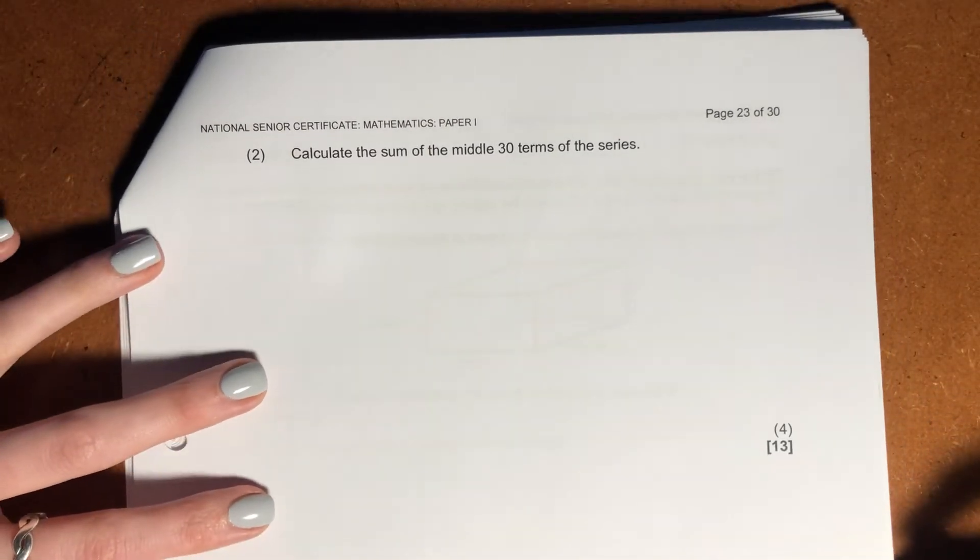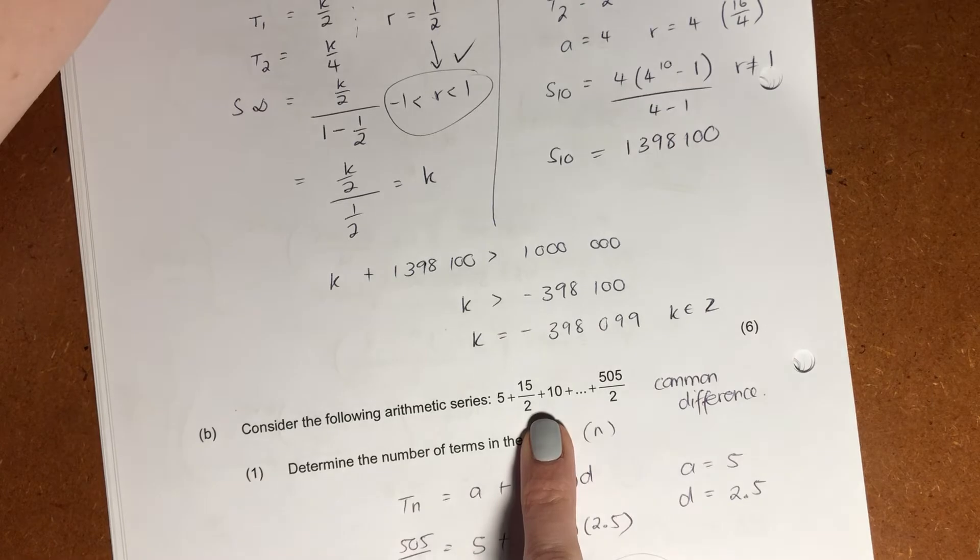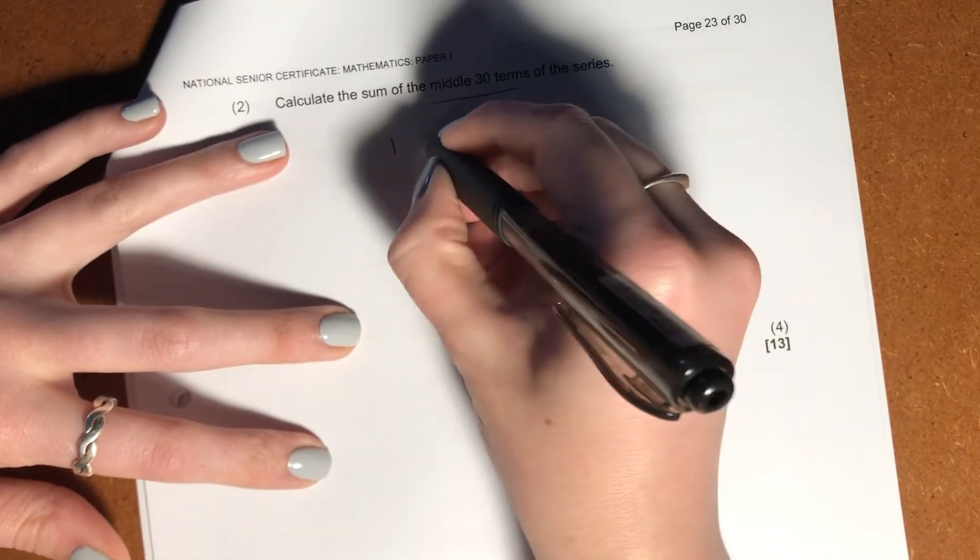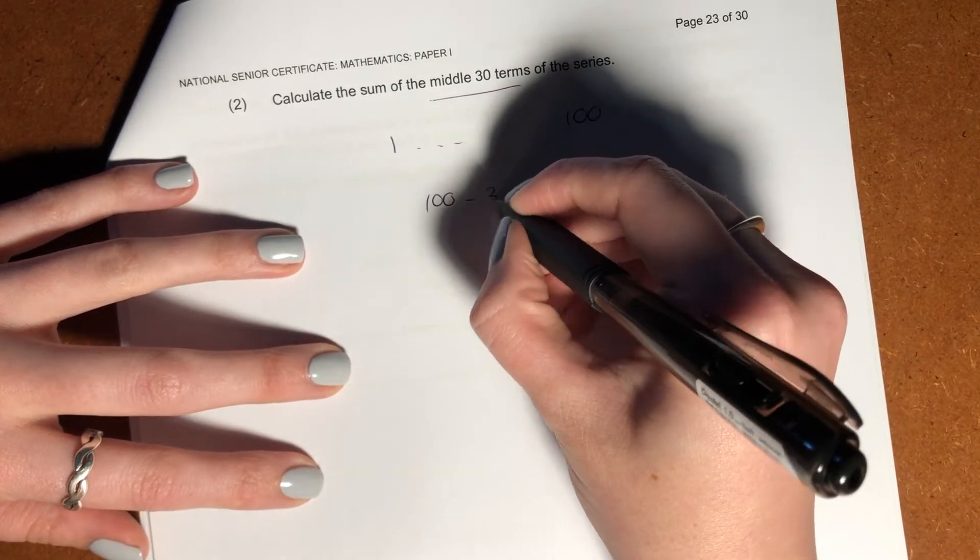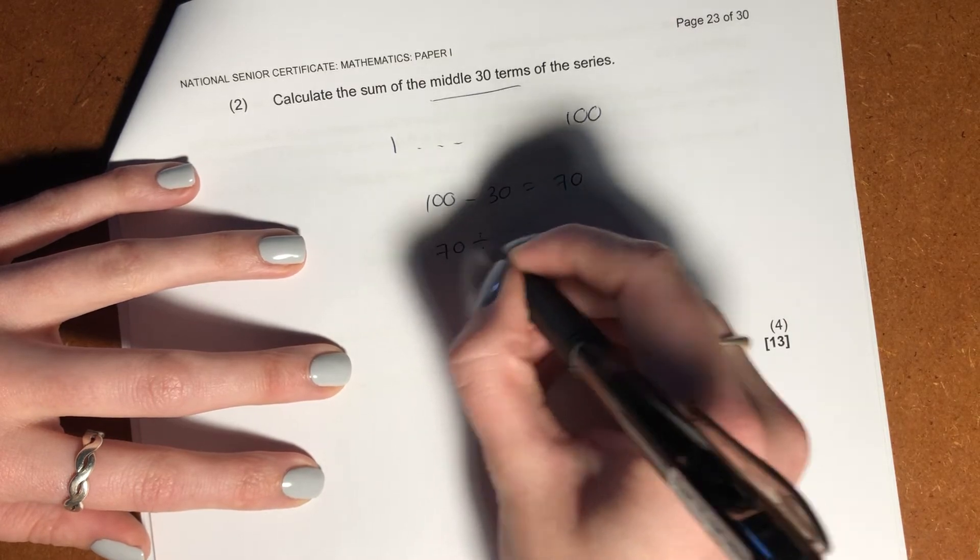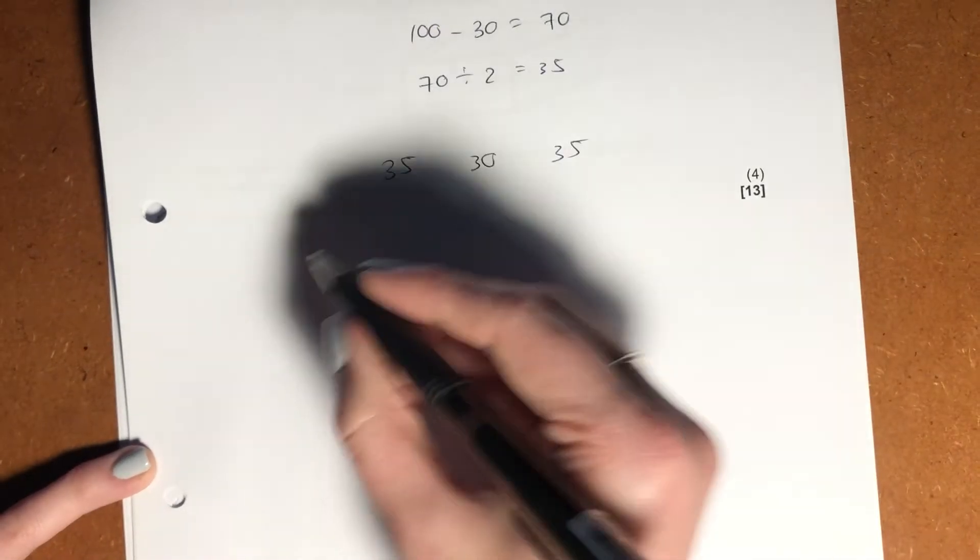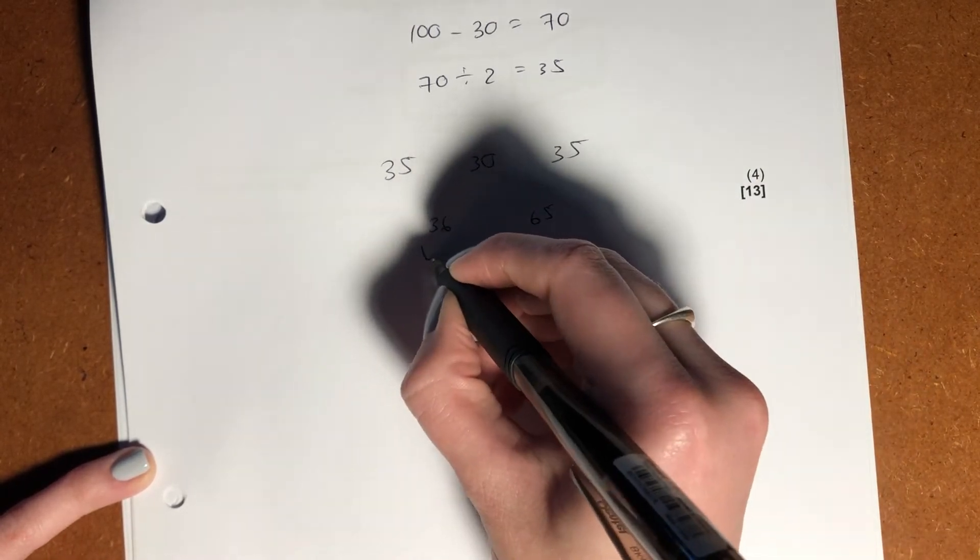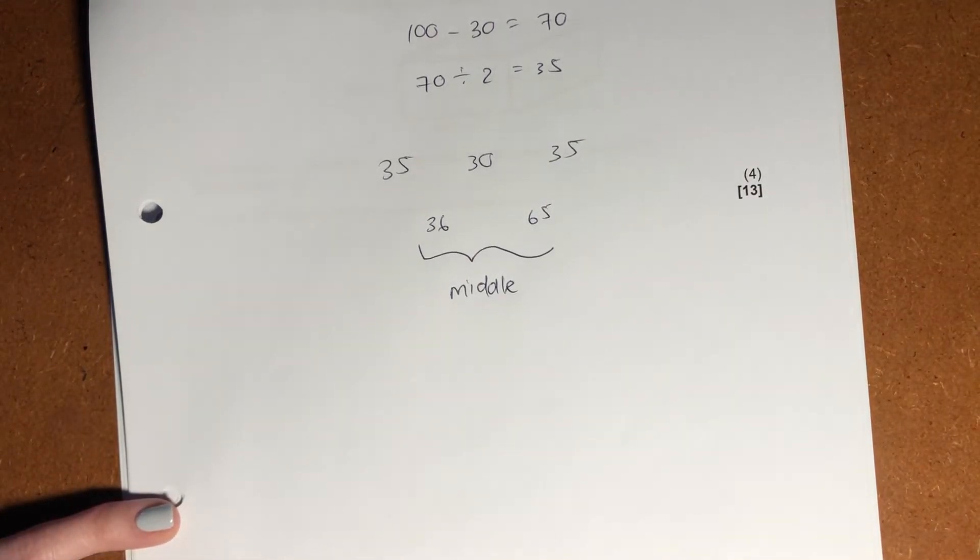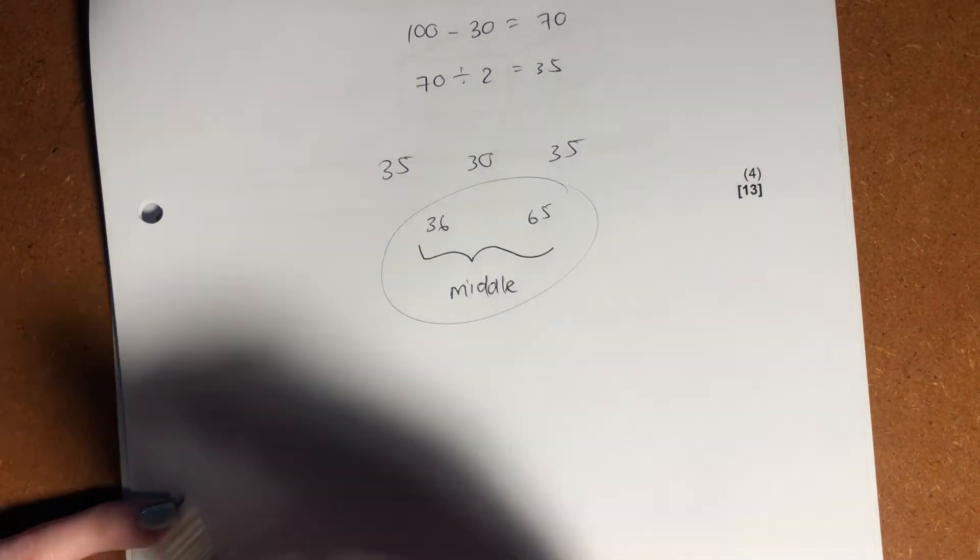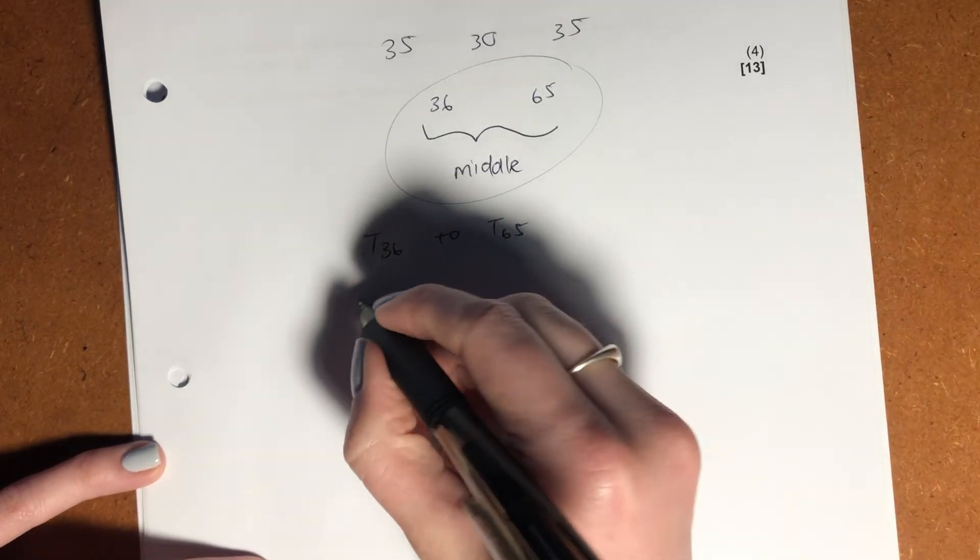It's very important here that you are able to see what needs to be done and what formulas you need to use. Now, last question for question 11. It says, calculate the sum of the middle 30 terms of the series. Which series is it talking about? This series. So now if we have 100 terms, we want to get the middle 30. So we know that 100 minus 30 equals 70. 70 divided by 2 gives me 35. So I know that I go 35, 30 in the middle, then 35. So we know that from term 36 to term 65, that is our middle 30 terms. So effectively, we are splicing up our series and we are saying this is a new series that we're going to look at. We have T36 to T65. That's what we're interested in doing and we want to sum across those.